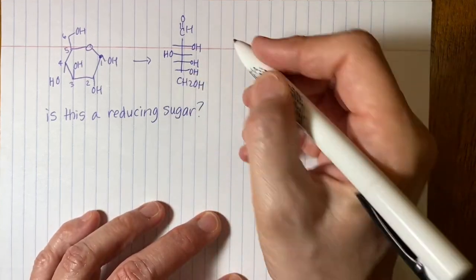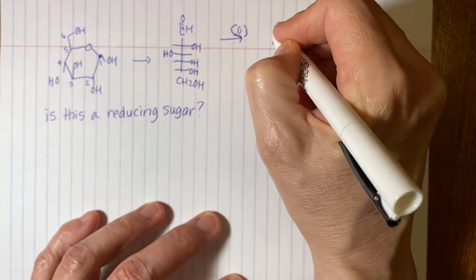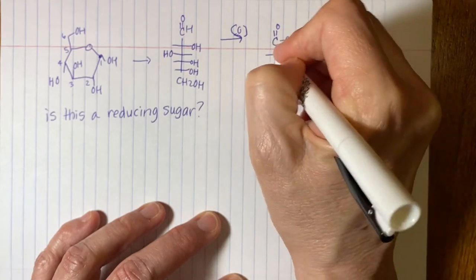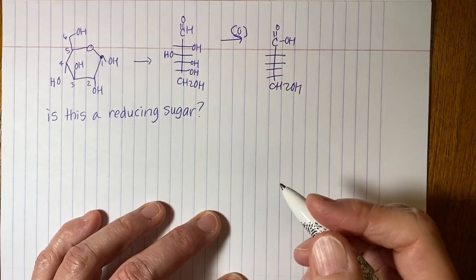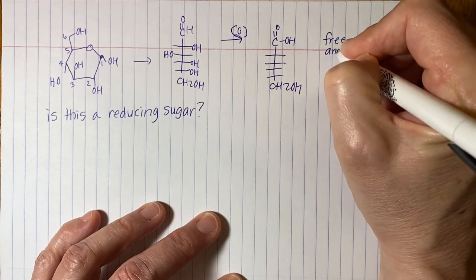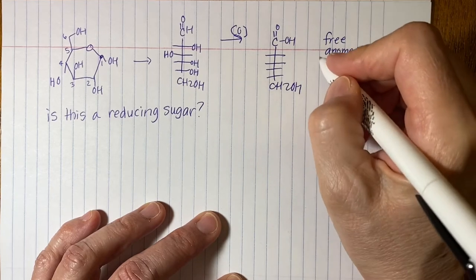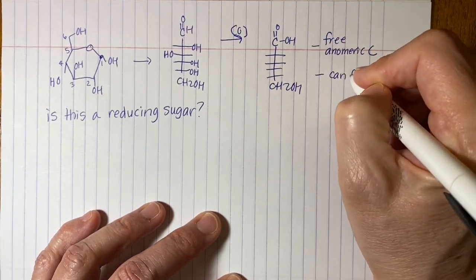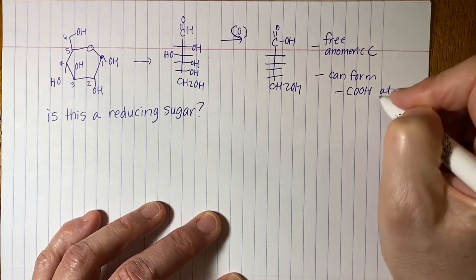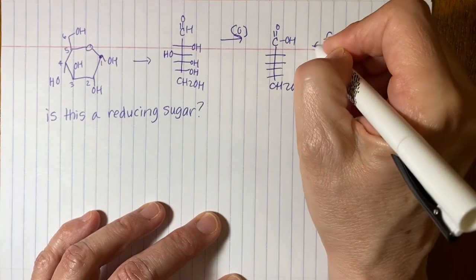Since it can form a linear form, it can oxidize. So that aldehyde group will get converted to a hydroxyl. And then the rest will be all the same. So if there's a free anomeric carbon and can form a carboxyl group at aldehyde. So those are our criteria.